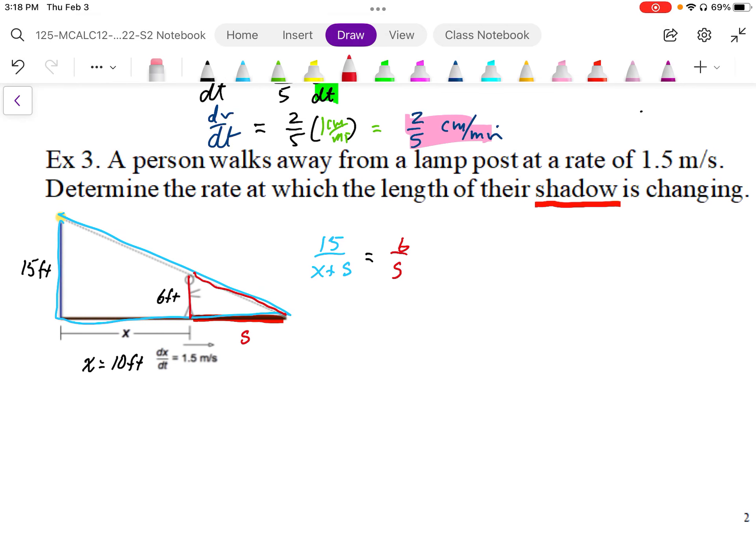Okay, so what we can then do is, once we have this connected, we can actually just differentiate this with respect to s. Now, we can differentiate this implicitly. However, it's not necessary to do that because we can simplify this first before we differentiate this. So we get 15s is equal to 6x plus 6s.